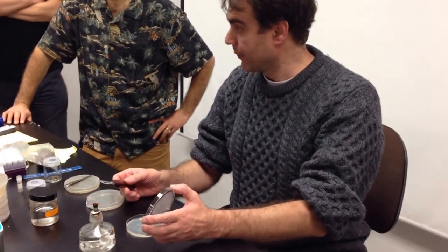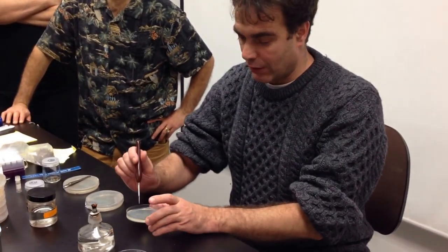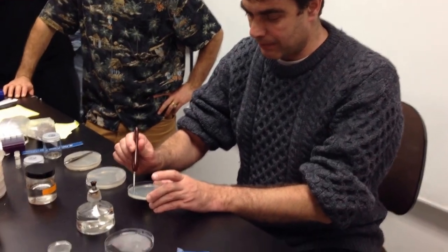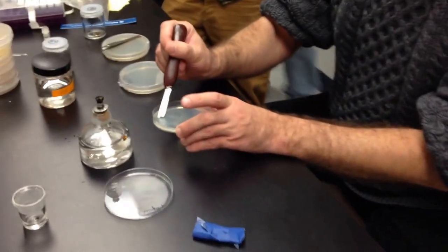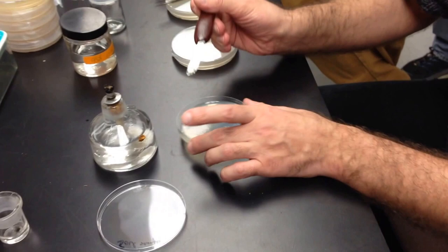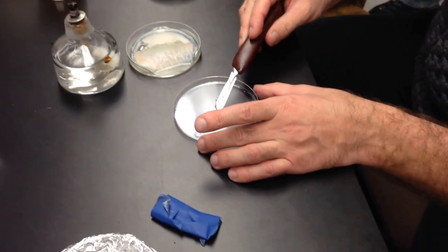So what you do, you have your agar plate. You cut a little bit on the side. A small chunk of agar. And you place it here in the middle, okay?